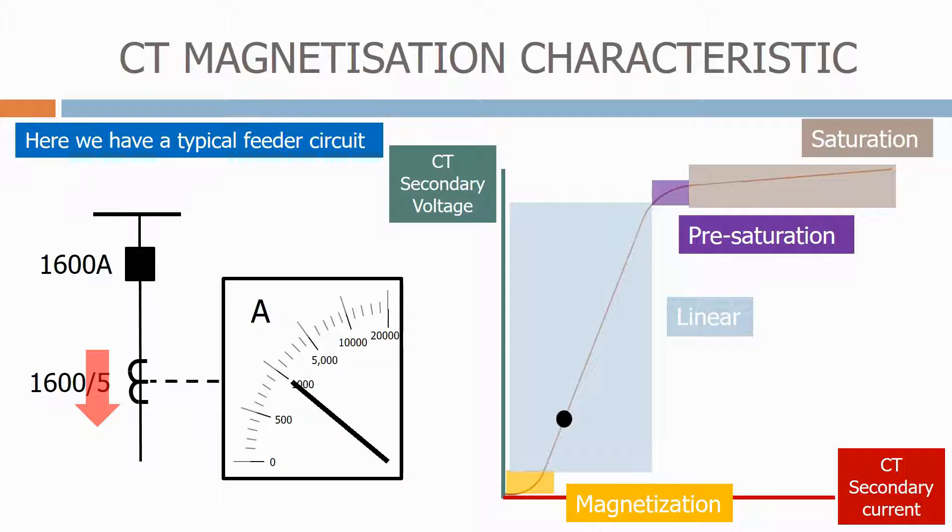Let's now apply a high resistance fault to the feeder. The primary current now increases substantially, but as it's a high resistance fault, the current is limited, and we therefore still operate in the linear zone.